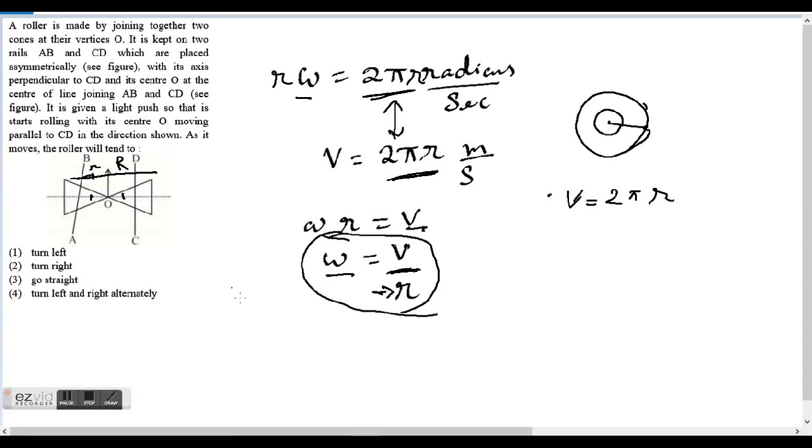So what will happen to angular velocity? If the angular velocity on the left hand side, if r is decreasing, then angular velocity will tend to increase on this side. So omega is trying to increase on this side.